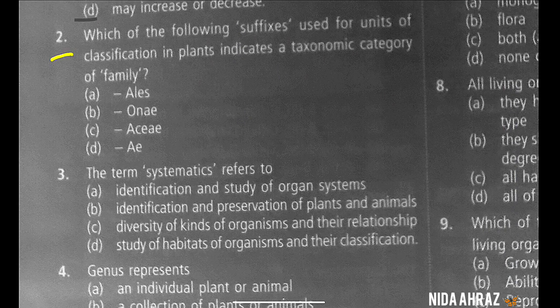Which of the following suffixes used for units of classification in plants indicates a taxonomic category of family? The name of the plant family is a plural adjective and is formed by adding the suffix '-aceae'. For example: Rosaceae, Liliaceae, and Cucurbitaceae. So option C is the correct choice.